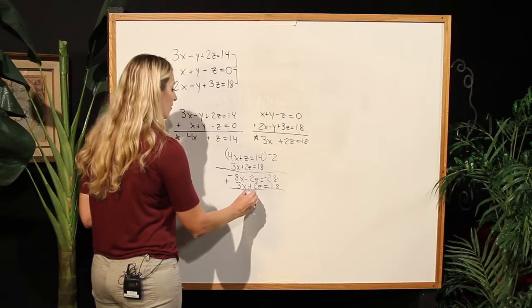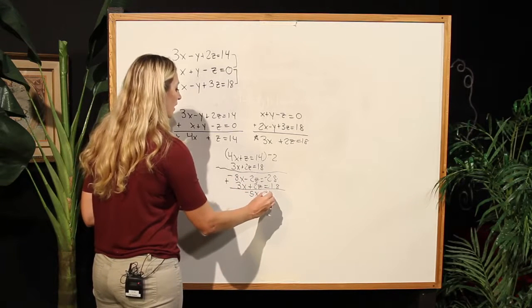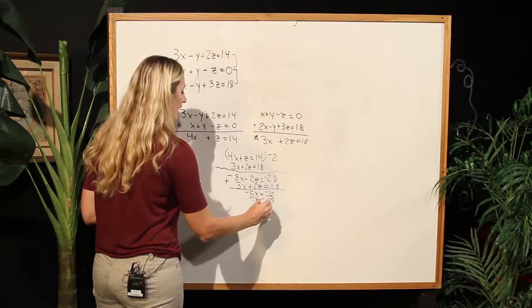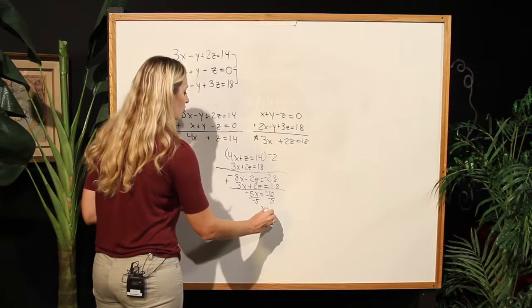I will have negative 5x now, equaling negative 10, and dividing by negative 5, I have x equaling 2.